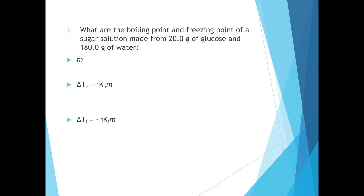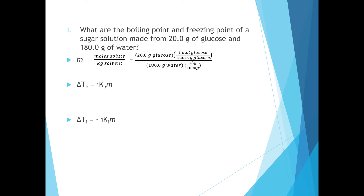We're going to look at the boiling point and freezing point of a solution of sugar and water. Sugar, or glucose, is a covalent compound, which means that when it dissolves in water it produces only one particle — a van't Hoff factor of one. We begin by calculating the molality, which is moles of solute per kilogram of solvent. To find moles of solute, we take the mass of solute divided by its molar mass, and to find kilograms of solvent we take the mass of water in grams and divide by 1000. The molality of this solution is 0.617.